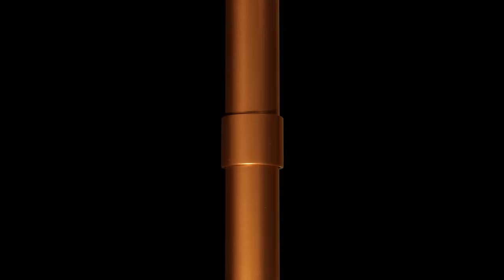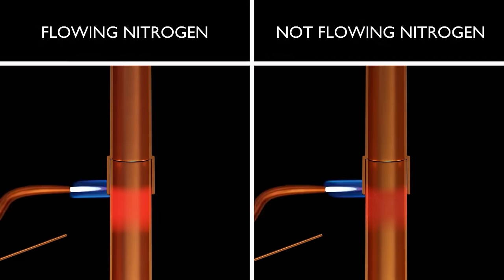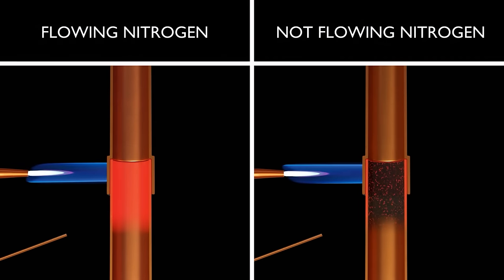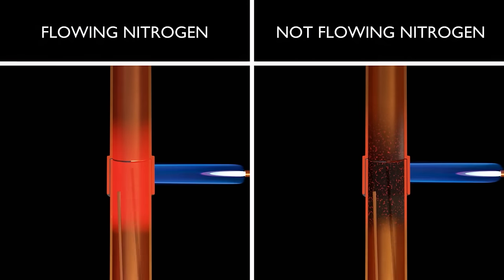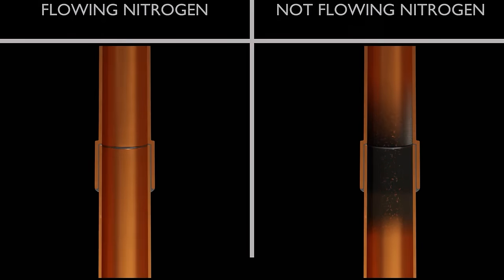Next, we're going to show why it's so critical to flow nitrogen at that 3 to 5 SCFH. If you fail to flow nitrogen, cupric or copper oxide can build up inside the tube, which can cause system contamination, clogged screens, dryers, and expansion valves.